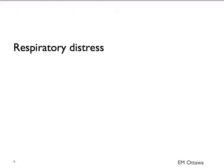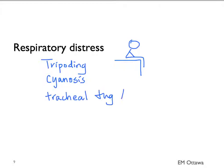We want to specifically look for signs of respiratory distress that include tripodding, when the patient sits upright and leans forward. We look for cyanosis, tracheal tugging, intercostal indrawing, and abdominal breathing.